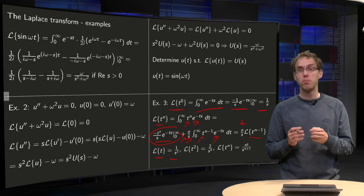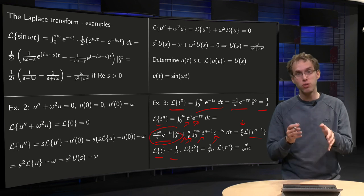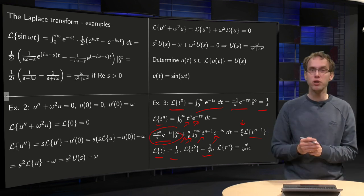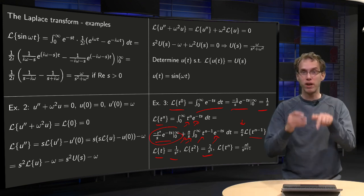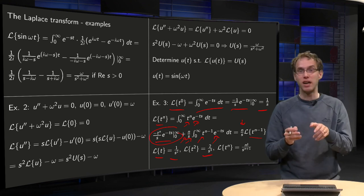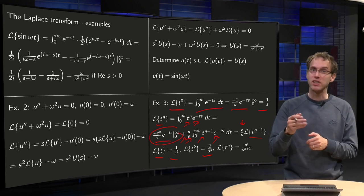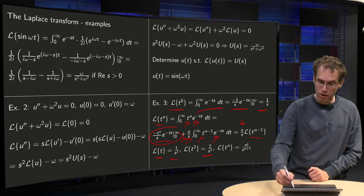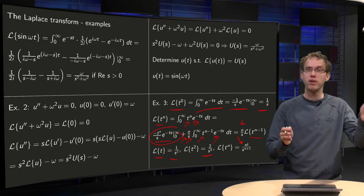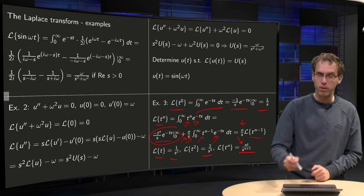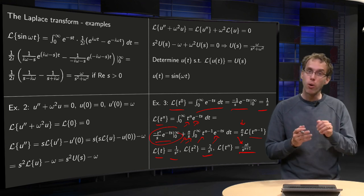Continuing the pattern: L{t²} = 2/s³, L{t³} = 3·2/s⁴, L{t⁴} = 4·3·2/s⁵, and so on. You observe that in the numerator you get n factorial, and in the denominator you get s to the power n+1. So the Laplace transform of t^n equals n! over s^(n+1). That's how you can compute the Laplace transform of all polynomial functions.